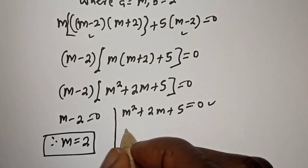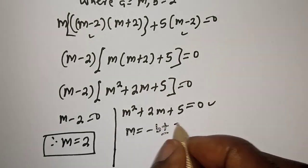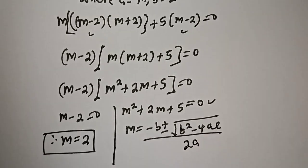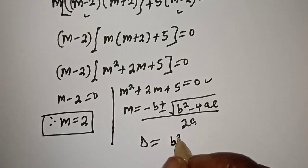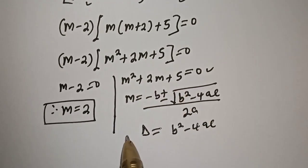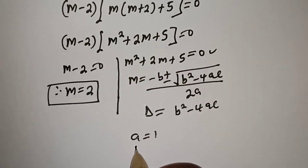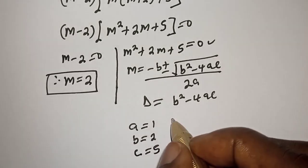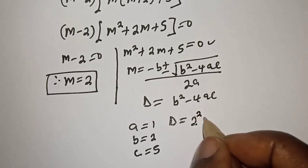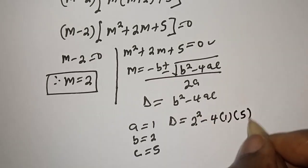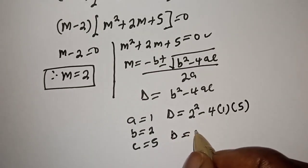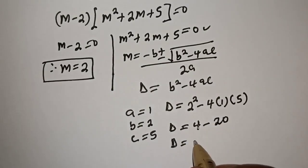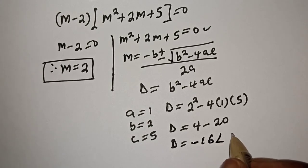The quadratic general formula is m equals minus b plus or minus square root of b squared minus 4ac over 2a. The discriminant D equals b squared minus 4ac. From this equation, a is equal to 1, b is equal to 2, and c is equal to 5. Then D is equal to 2 squared minus 4 multiplied by 1 multiplied by 5, which is 4 minus 20, giving D equal to minus 16.